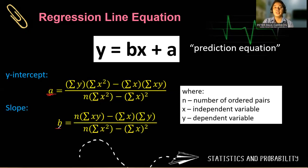And for the slope, it is n times the summation of xy, minus the summation of x times the summation of y, all over n times the summation of x squared minus the square of the summation of x. And n is our number of pairs, and x and y are our independent and the dependent variable.